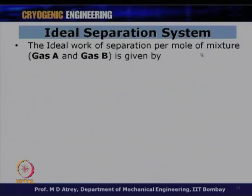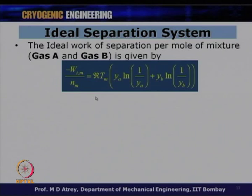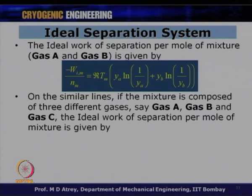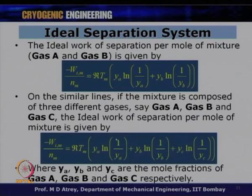Now let us calculate the work of separation for the ideal separation system. For a two-gas mixture (gas A and gas B), the ideal work of separation per mole of mixture is: WIM/NM = RTM × [YA log(1/YA) + YB log(1/YB)], where YA and YB are the molar fractions respectively. For a three-gas mixture (A, B, C), the formula extends to include a third term YC log(1/YC).